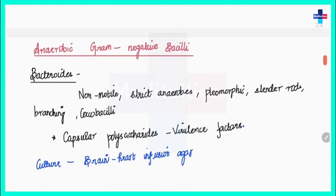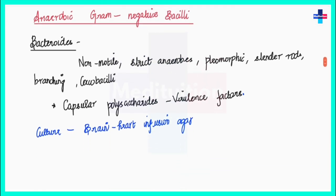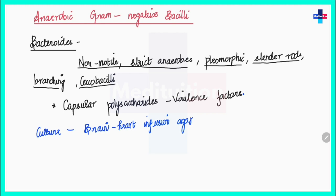Moving on to anaerobic gram-negative bacilli, which include many medically important microorganisms. The first is Bacteroides. These are non-motile, strict anaerobes that are pleomorphic — appearing as slender rods with branching forms and as coccobacilli. They are seen in pairs and sometimes in short chains.